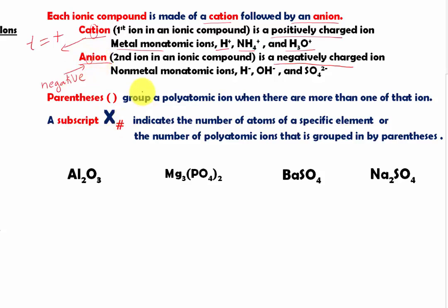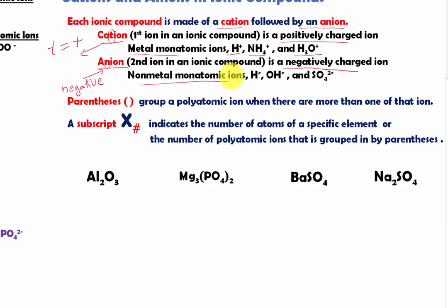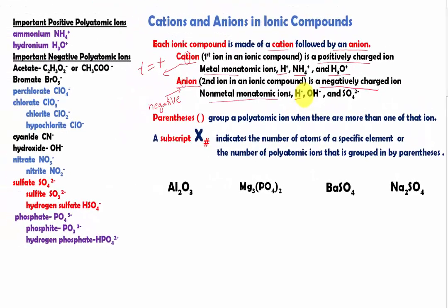Some of the common negatively charged ions are the non-metal monatomic ions, which will be on your periodic table, or hydrogen that has gained one electron. We also have hydroxide and sulfate, and some other common ions listed here as well. To identify cations and anions in an ionic compound, you need to know these polyatomic ions as well as the monatomic ions on the periodic table.